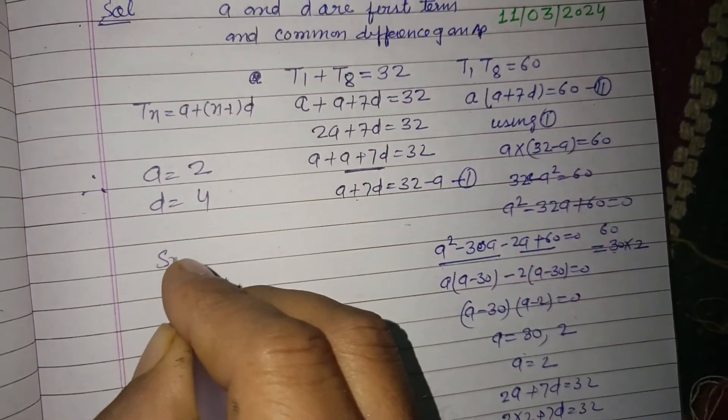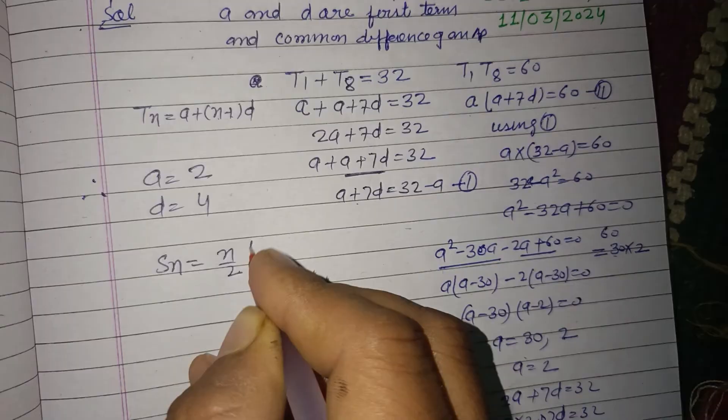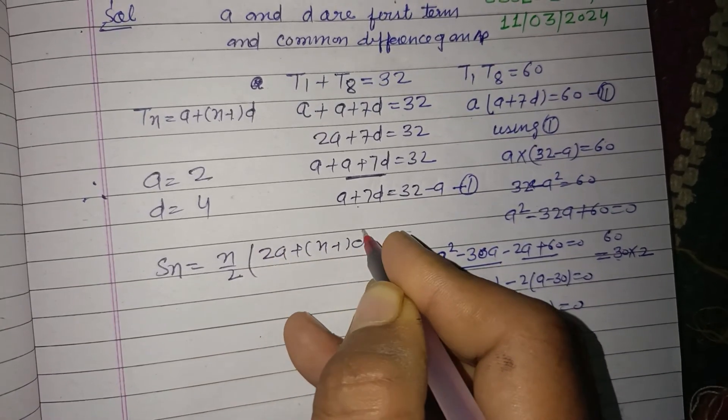Now hence also find the sum of first 20 terms. Sum of n terms is n/2 times (2a plus (n-1) times d).